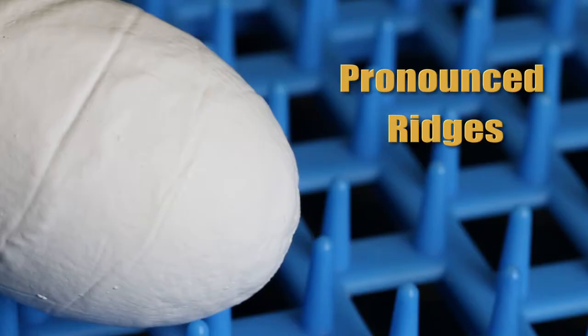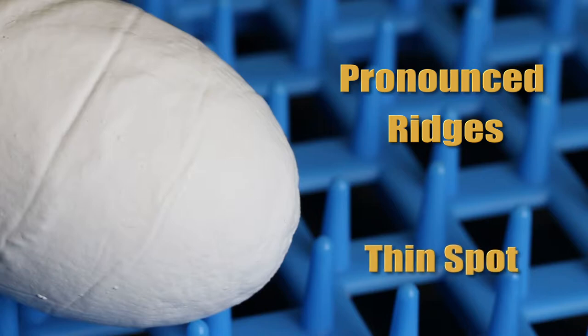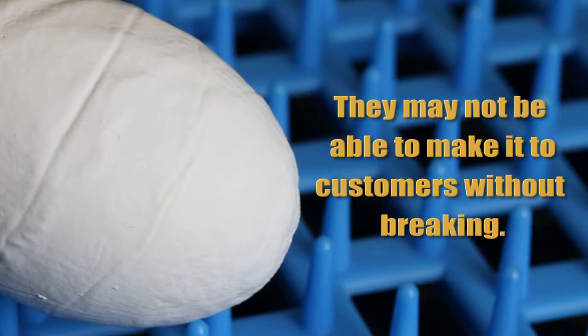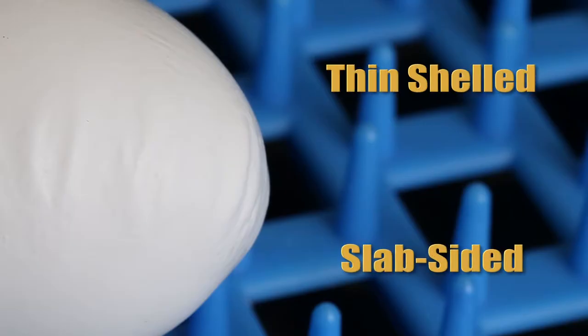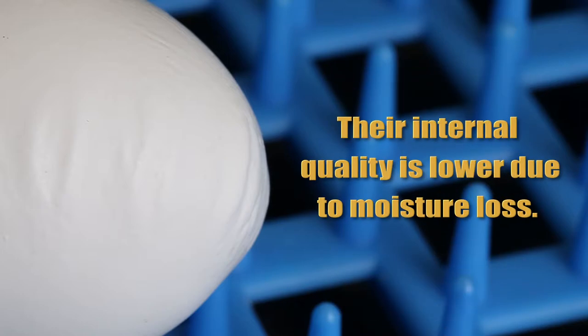Eggs with pronounced ridges are faulty in their overall soundness. The same is true for eggs that have a thin spot. They may not be capable of making it to customers without breaking. Thin-shelled or slab-sided eggs lose moisture at a faster rate than eggs with sound shells. Their internal quality is lower due to moisture loss.